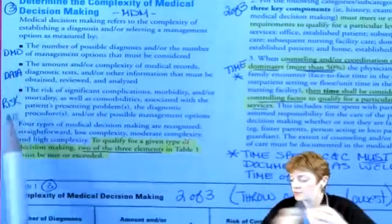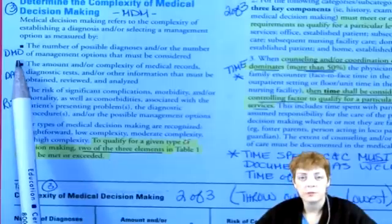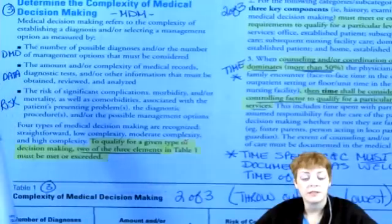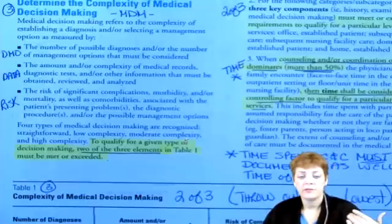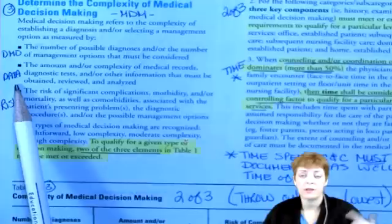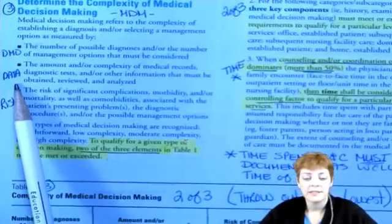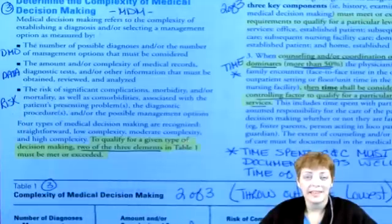Determine the complexity of medical decision-making. These bullets correspond to those three columns. DMO is the number of possible diagnoses or the number of management options that must be considered. Medical decision-making is what's going on in the physician's head after they've taken your history, discussed review of systems, and done an exam — now they've got to put it all together and decide what to do: send you for physical therapy, order tests, write a prescription. Data is the amount and/or complexity of medical records, tests, or other information that must be obtained, reviewed, and analyzed.